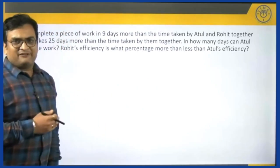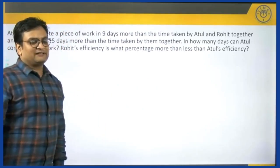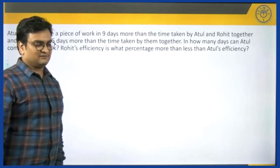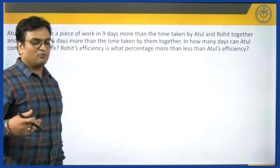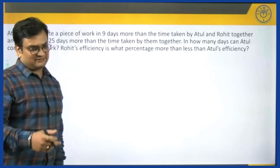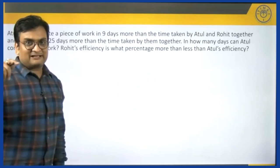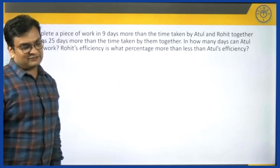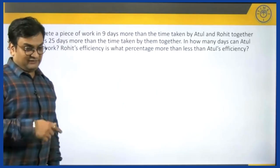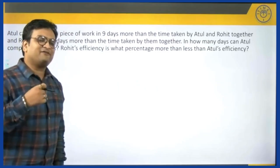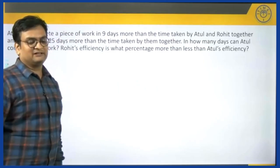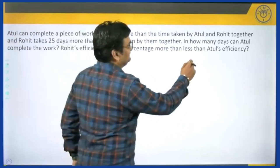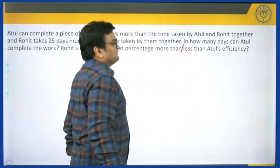The question says: Atul can complete a piece of work in 9 days more than the time taken by Atul and Rohit together, and Rohit takes 25 days more than the time taken by them together. So Atul takes 9 days more and Rohit takes 25 days more. In how many days can Atul complete the work? And also, Rohit's efficiency is what percentage more than or less than Atul's efficiency?